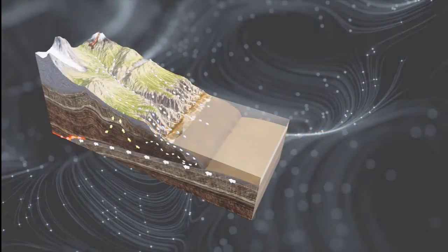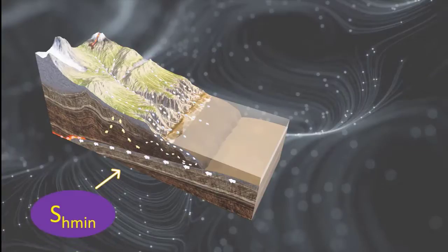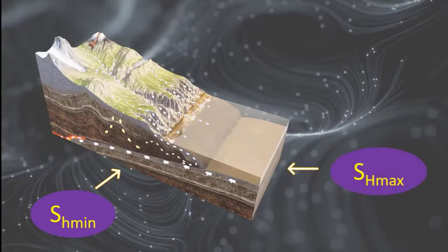Rock buried deep underground is subjected to multiple stresses. They usually differ in direction and magnitude, as they originate from different sources. For instance, vertical stress SV at a particular depth is essentially due to the weight of the overlying rock.